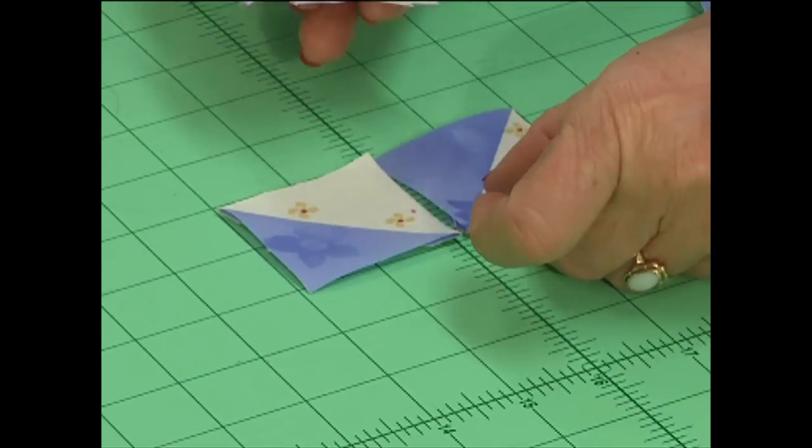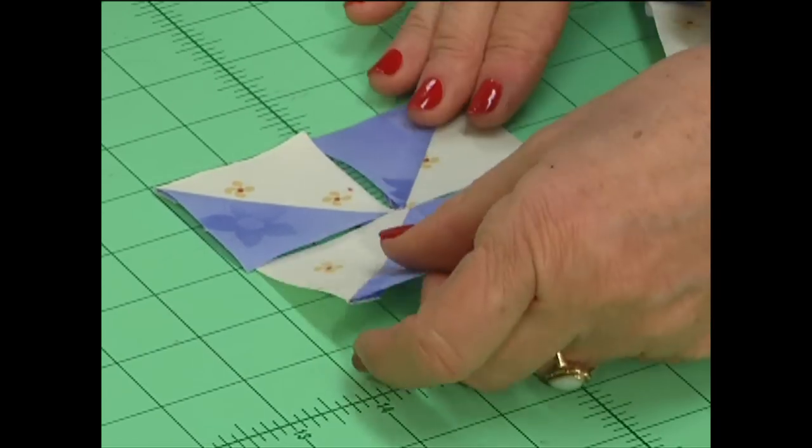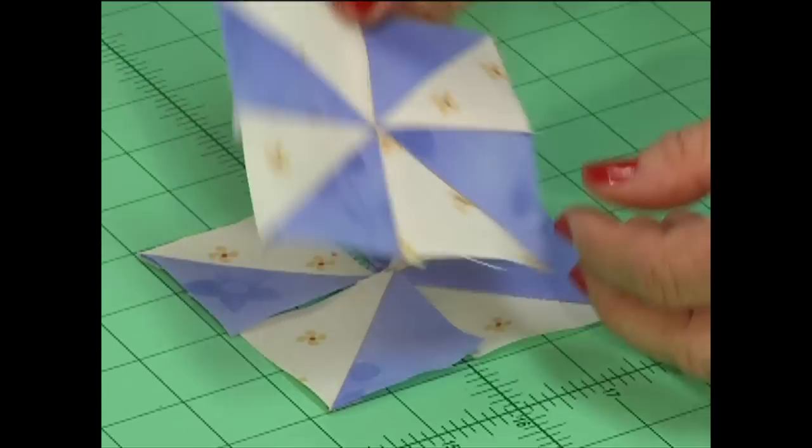Lay out four of them for your block. Sew them together, and you can spin the back.